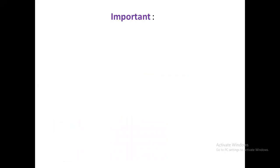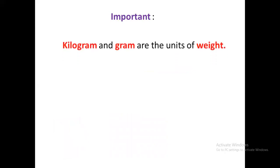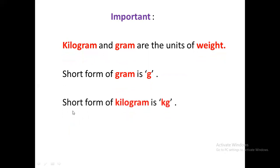So, some important points we have to revise. Number one, kilogram and gram are the units of weight. What are the units of weight? Kilogram and gram. Short form of gram is g, small g. Short form of kilogram is kg — k for kilo and g for gram.